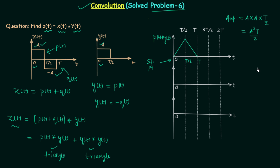Now for the second convolution, Q(t) convolved with Y(t). The range in which this triangle will exist is from T/2 plus 0 to T plus T/2. Signal Q(t) is nonzero from T/2 to T, and Y(t) is nonzero from 0 to T/2. So T/2 plus 0 gives T/2, and T plus T/2 gives 3T/2. Our signal will be nonzero from T/2 to 3T/2.